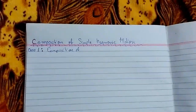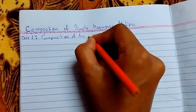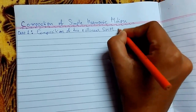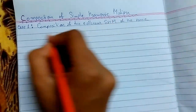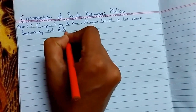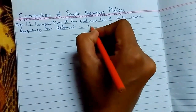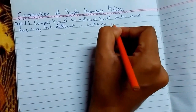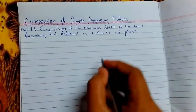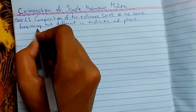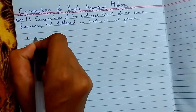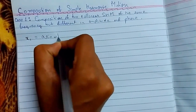Case one is the composition of two collinear simple harmonic motions of the same frequency but different amplitude and phase. We consider two collinear simple harmonic motions: the first will be x₁ equals a sine of ωt.